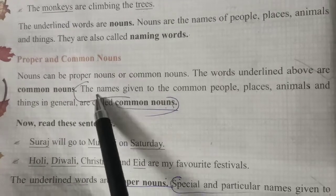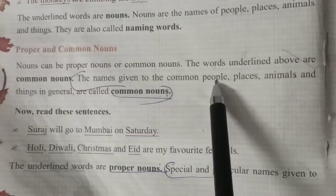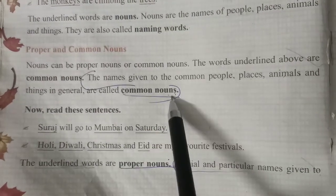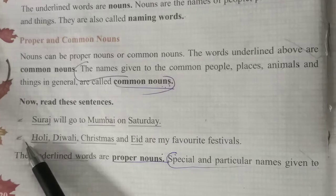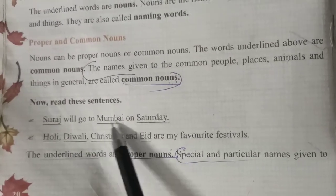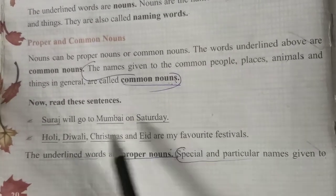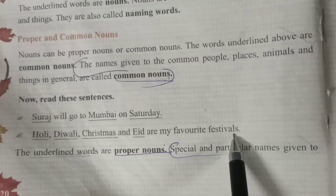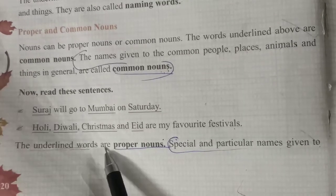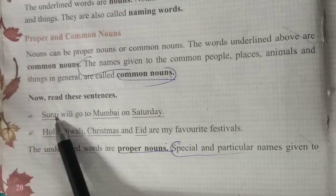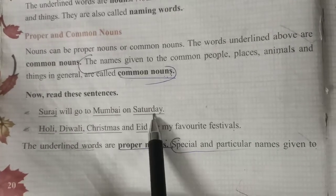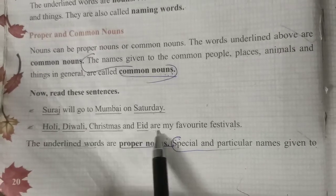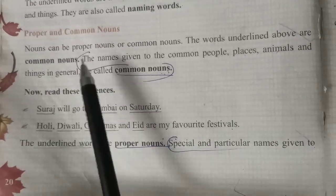Common nouns: the names given to common people, places, animals, and things in general are called common nouns. For example: 'Suraj will go to Bombay on Saturday.' 'Holi, Diwali, Christmas, and Eid are my favorite festivals.' The underlined words — Suraj, Bombay, Saturday, Holi, Diwali, Christmas, Eid — these are proper nouns, not common nouns.